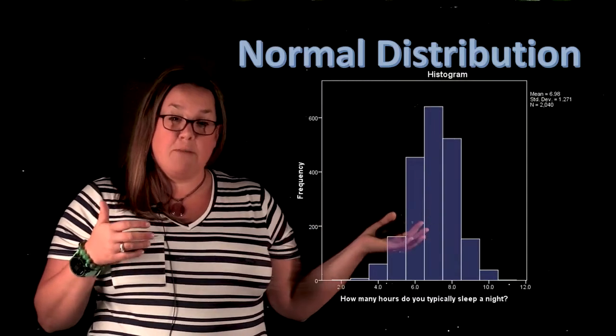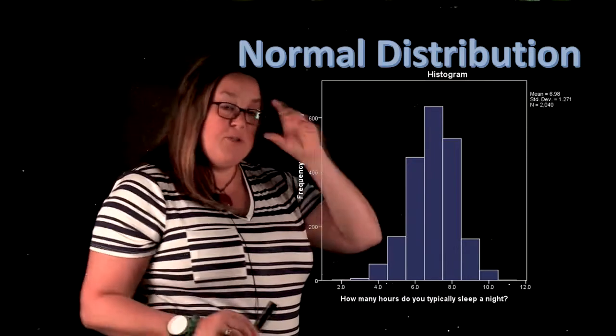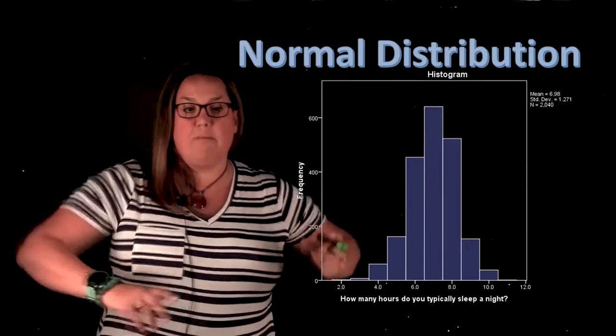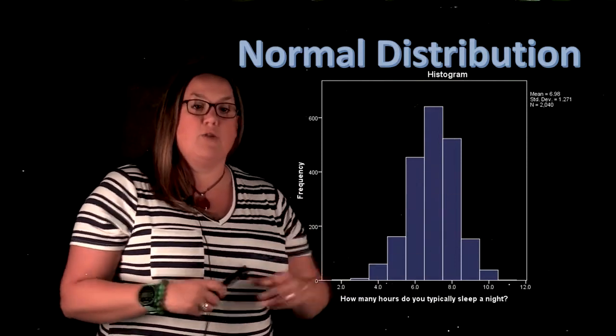So this is an example of data that follows the normal distribution. Following the normal distribution again just means that that particular data looks normal or it has that shape once the histogram is plotted.